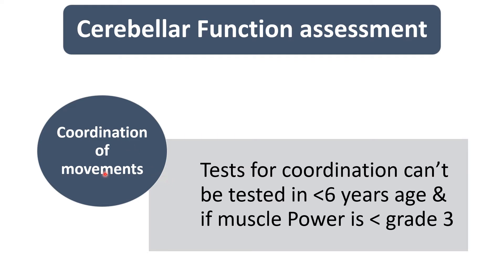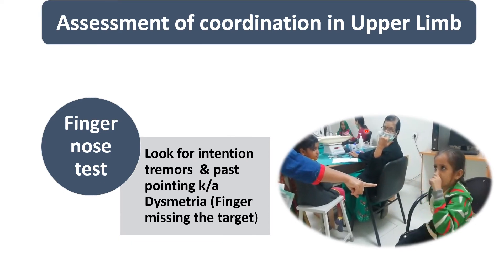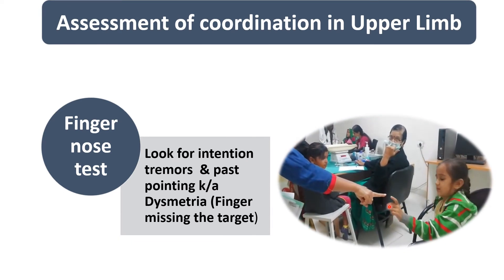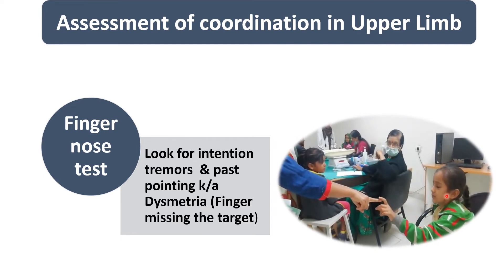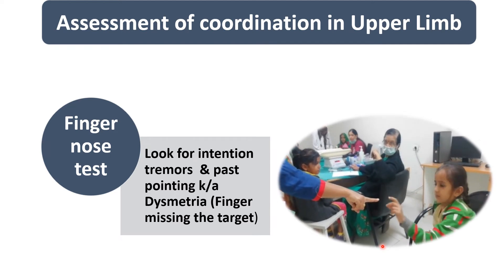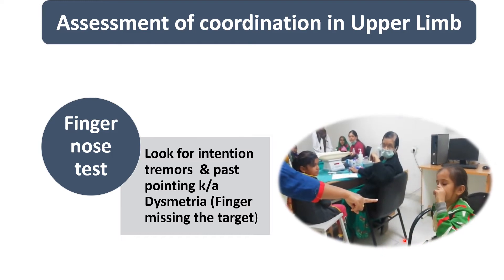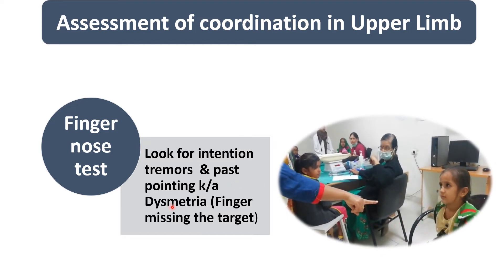For coordination of movement, it is important to remember that it is not possible to assess coordination in children less than 6 years of age. Also, if the child has muscle power less than grade 3, coordination cannot be assessed. For the finger-nose test, we ask the child to touch the tip of the examiner's index finger and then touch the tip of their nose. In cerebellar disease, as seen in this video, the child is not able to do this and shows intention tremor and past-pointing — known as dysmetria — because the child is missing the target. Dysmetria means error in judging distance: overshooting is hypermetria, and failing to reach the target is hypometria.